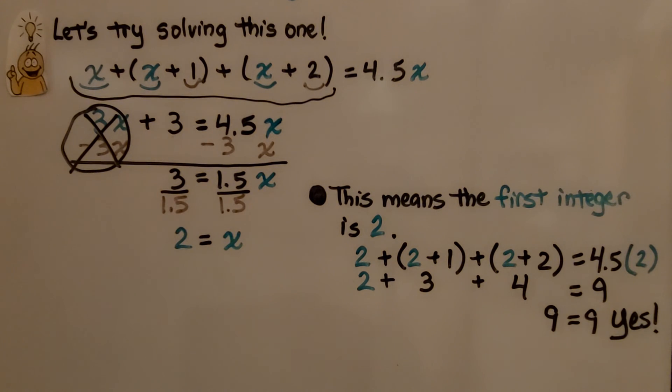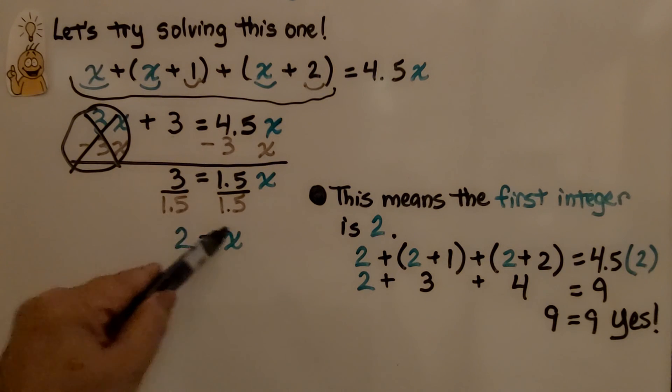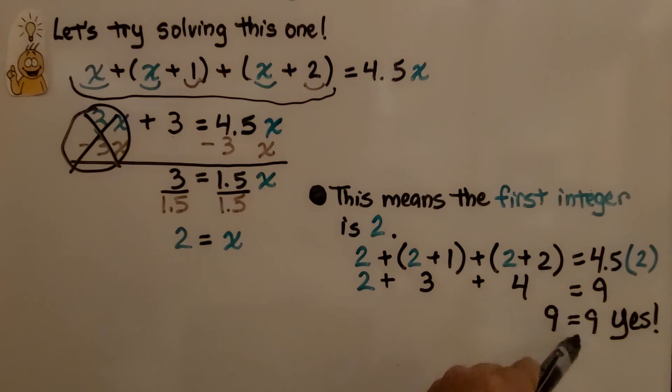That means the first integer is 2, which means the next integer is 3 and the next integer is 4. And 2 plus 3 plus 4 equals 9. And since we had 4.5x, that means 4.5 times 2. That's equal to 9. So yes, we solved it correctly.